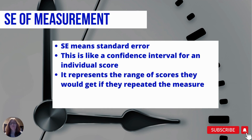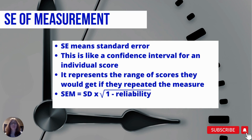We calculate this by finding the standard deviation for a person's scores. If they took the test at least twice, you would have a standard deviation, and then you multiply that by the square root of one minus the reliability.